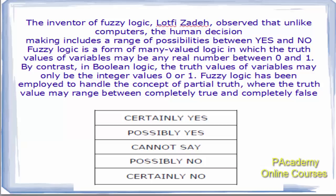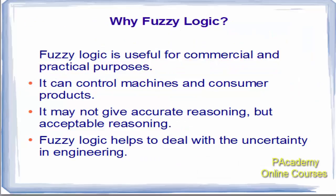Fuzzy logic has been employed to handle the concept of partial truth, where truth values range between completely true and completely false. That reflects human thinking — a human while giving an output of yes or no will think in directions like: certainly yes, possibly yes, cannot say, possibly no, certainly no. All these possibilities come between yes and no, and these are taken into consideration by fuzzy logic.